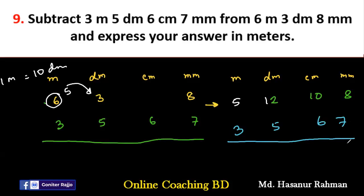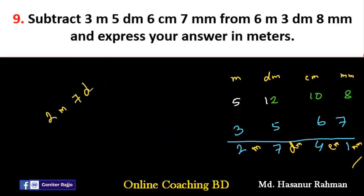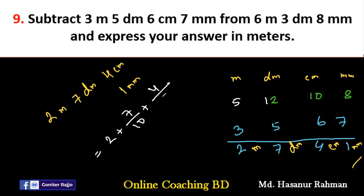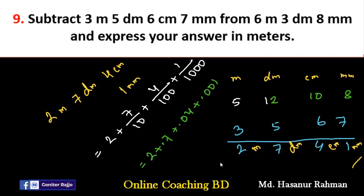The final answer is 2 meter, 7 decimeter, 4 centimeter, 1 millimeter. To convert this to meters: meter stays as 2; 7 decimeter divided by 10 is 0.7; 4 centimeter divided by 100 is 0.04; 1 millimeter divided by 1000 is 0.001. So, 2 plus 0.7 plus 0.04 plus 0.001 gives 2.741 meters as the final answer for number nine.